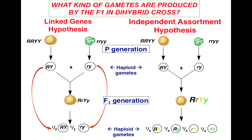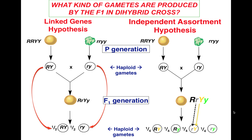If, however, they segregate from each other — if the round allele is not linked to the yellow allele even though they came as a package from the parents — then you will end up with four different combinations of gametes. The round allele could pair with a yellow allele or it could pair with a green allele. Similarly, the wrinkled allele could pair with a yellow allele or it could pair with a green allele.